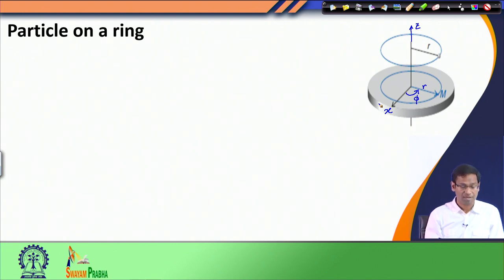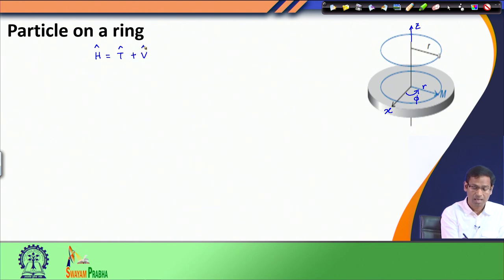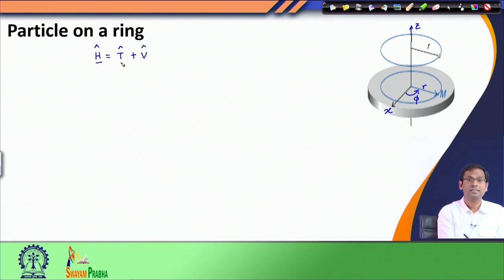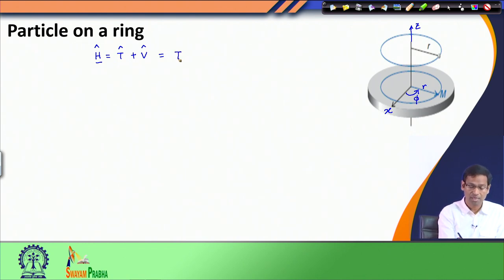For such a system, if I have to write down the Hamiltonian to solve this problem quantum mechanically, I would start by writing down the Hamiltonian. The Hamiltonian will have two terms: one kinetic energy term and one potential energy term. Like the particle in a one-dimensional box problem, we assume that this particle when it goes around this ring experiences no other interaction. So its net potential energy is 0, and therefore my Hamiltonian has only the kinetic energy operator.